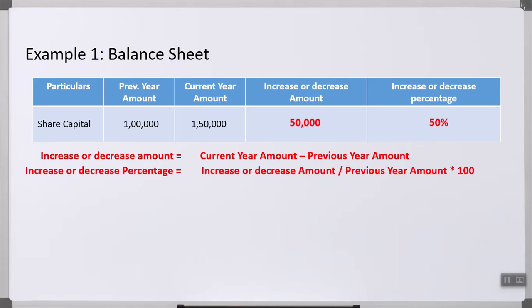A quick revision of the formulas: increase or decrease amount = current year amount minus previous year amount. Percentage = increase or decrease amount divided by previous year amount into 100. You can denote an increase with an upward arrow or plus sign, and a decrease with a minus sign or downward arrow.